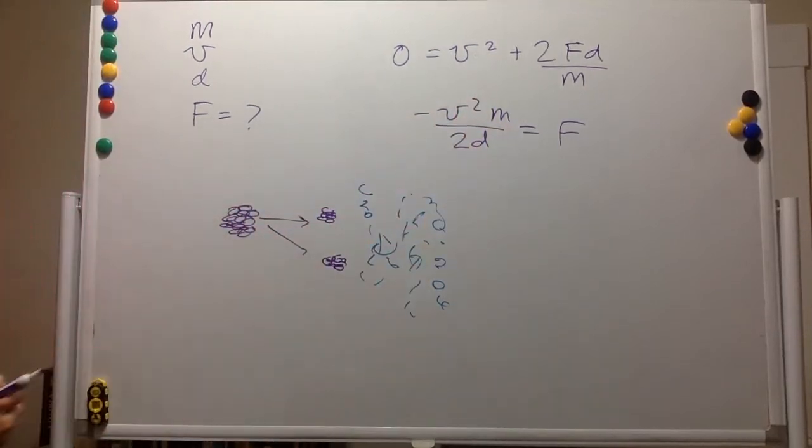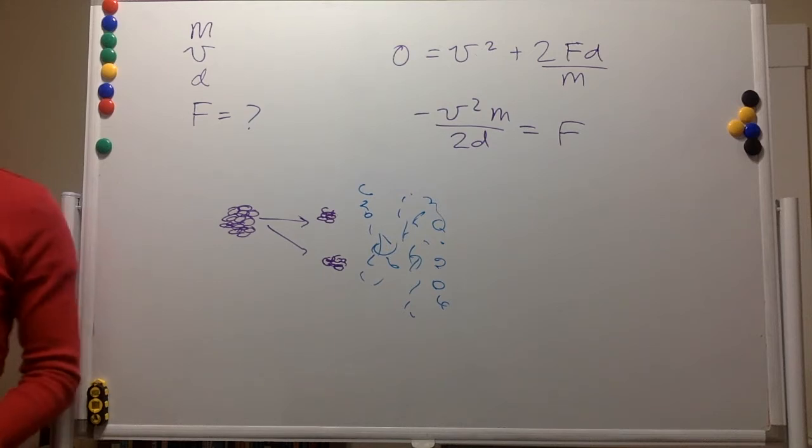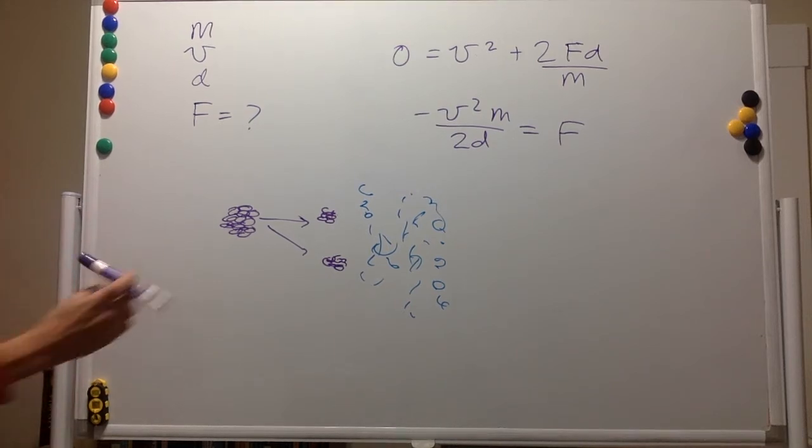And yeah, this is actually very general. This holds for any, not just any alpha particle, but any particle that finds itself in the same situation. So this is part A. For part B, we have to show that this has the right units.